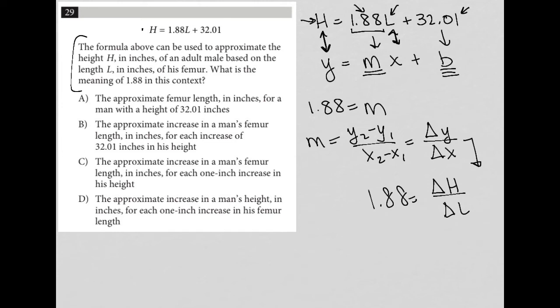So let's see which answer choice matches that. Choice A says the approximate femur length in inches. Automatically, that's wrong. 1.88 is not the femur length. So that's gone.